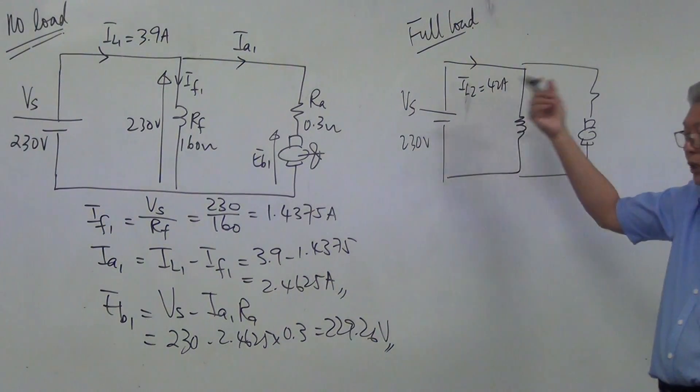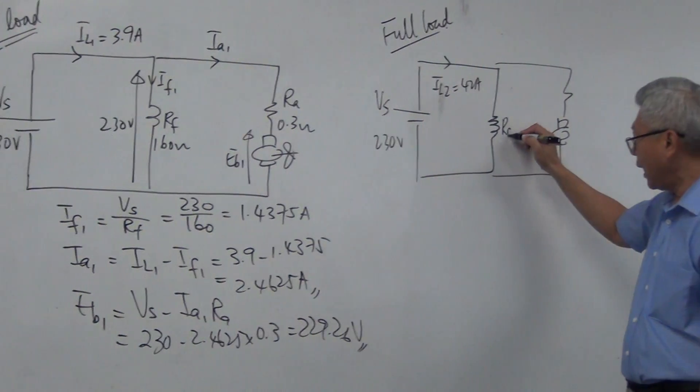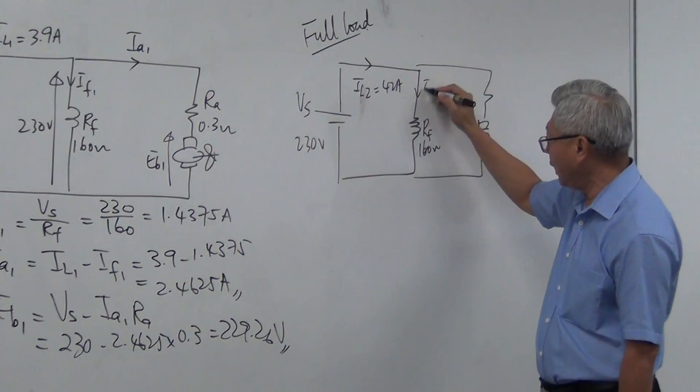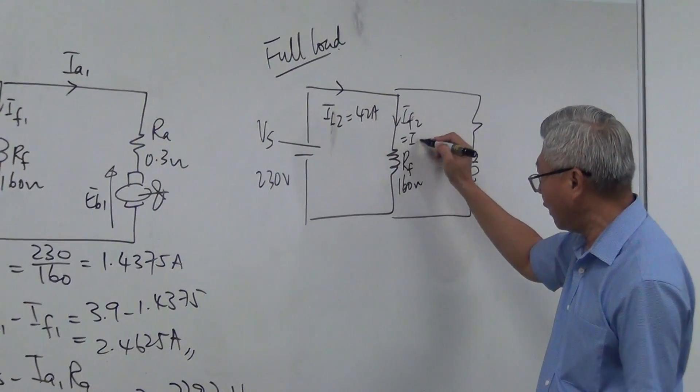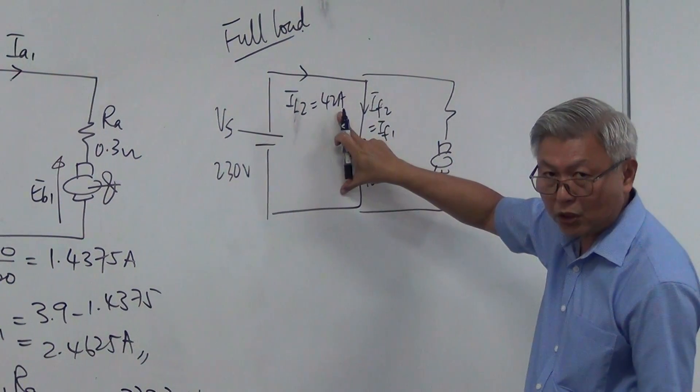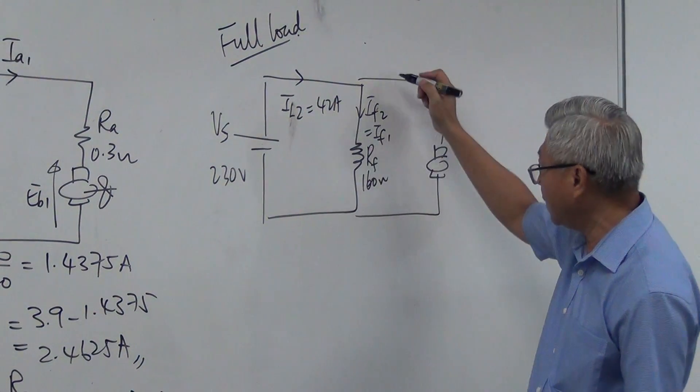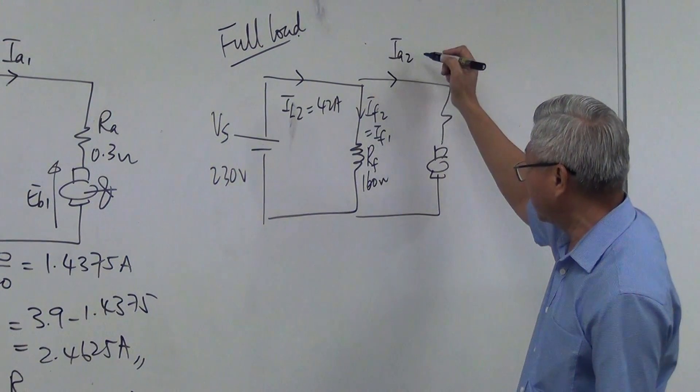Because it's doing a lot of work, so it needs to draw a lot of current. And RF is still the same, 160 ohm. And IF2 should be the same as IF1 because there's no change in voltage, no change in resistance. But Ia2 will be different.